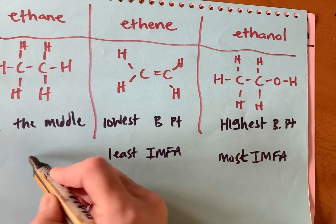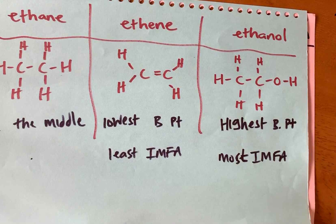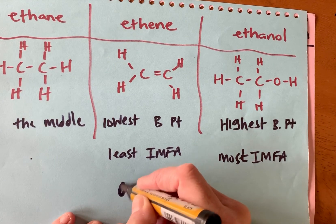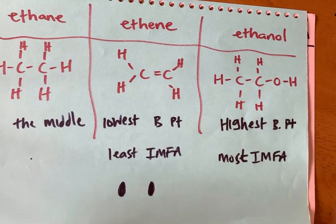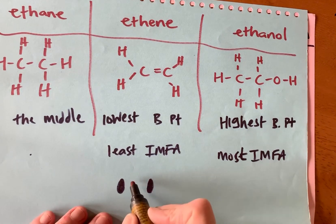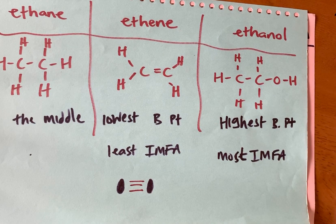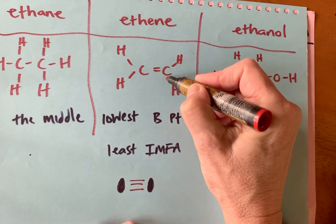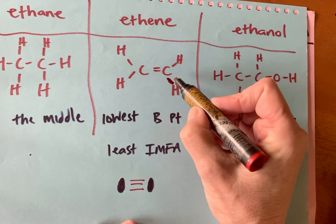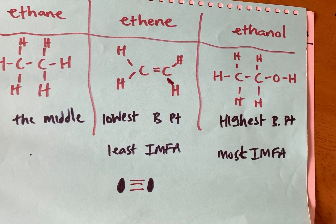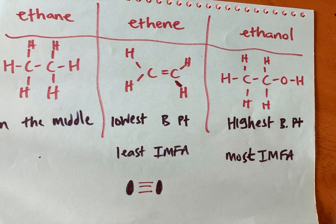Ethene has the least intermolecular forces of attraction, and ethane is in the middle. It's really important to remember that we're talking about the forces of attraction between molecules, not the lines you draw in a structure — those are the covalent bonds. We'll go back over this when we're back in school next week.